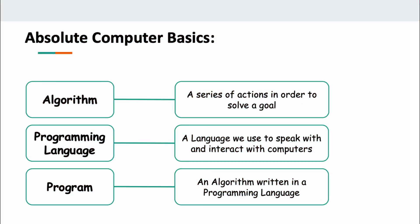If you're trying to learn this, you're in the right place. Before moving on, we need to address what is programming in its simplest form. Programming is a way for us, people, to communicate and talk with computers. Let's take a look at three key terms: algorithm, programming language, and program. An algorithm is a sequence of actions to solve a goal. A programming language is what we use to communicate with the computer — like Python, JavaScript, C++. And a program is an algorithm written in a programming language.